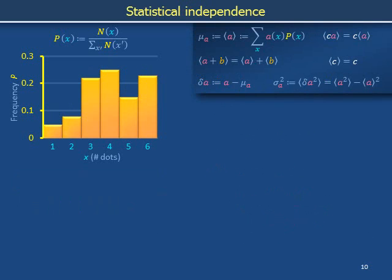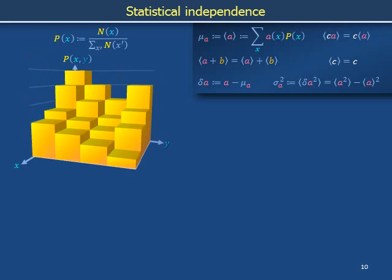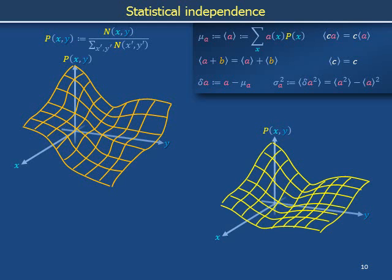Up to this point, we have considered experiments whose outcomes could be characterized using a single variable. For the case of the roll of a die, a single variable x represents the number of dots face-up. In many experiments, outcomes can only be fully represented using multiple variables. We illustrate an example in which outcomes land in a two-dimensional state space, represented by values of x and a second variable y. The analog of our previous bar chart is a three-dimensional collection of building blocks. The probability distribution is again normalized so that it sums to one. When discrete jumps between neighboring positions in state space are small, the pile of blocks appears to be replaced by a blanket, which we stylize using a wireframe.